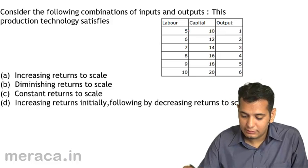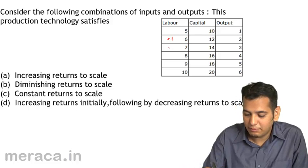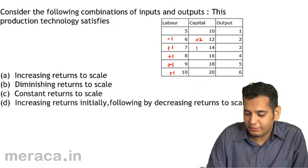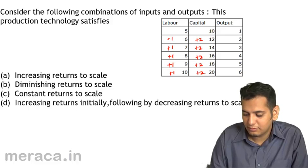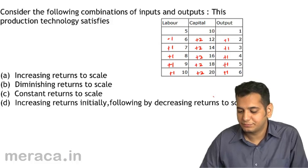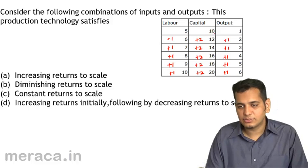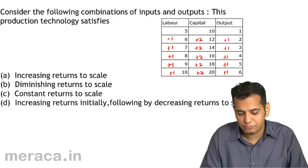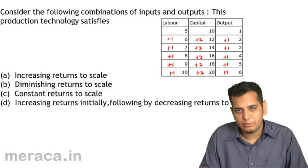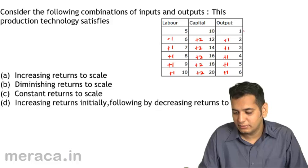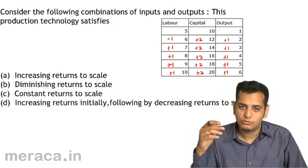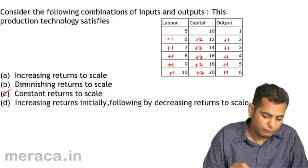In this case, note that labor at each level is increasing by one unit, but capital is increasing by two units at each level. The output is also increasing by one unit at each level. When labor is five and capital is ten, output is one. When labor increases by one and capital increases by two units, output increases to two — and this pattern remains constant. Thus we can say the firm is under constant returns to scale.